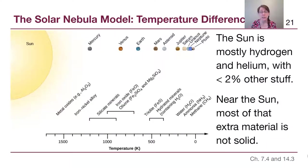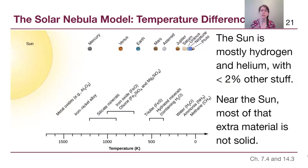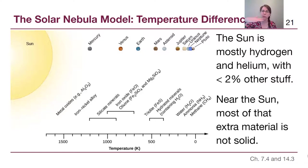The sun is mostly hydrogen and helium with about 2% other stuff. However, when we look at what Earth is made of, it is mostly that 2%. The hydrogen and helium gas concentrated and formed the sun, and what was left over in the disk was the heavier material — the leftover dust from the nebula.